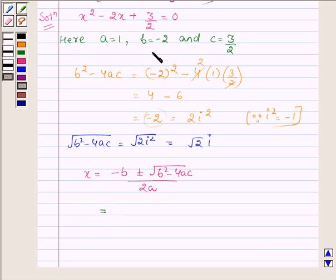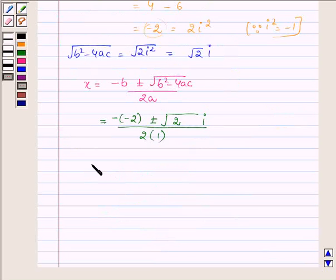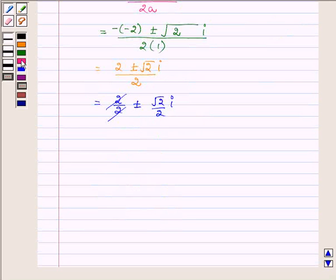Now, b is minus 2, so minus of minus 2 plus minus square root of 2 iota upon 2 into 1, which can be written as 2 plus minus square root of 2 iota upon 2. Separating the real and imaginary parts, we have 2/2 plus minus square root of 2 upon 2 iota. Cancelling common multiples, we have 1 plus minus square root of 2 upon 2 iota.